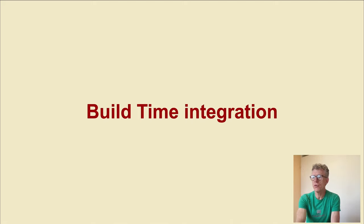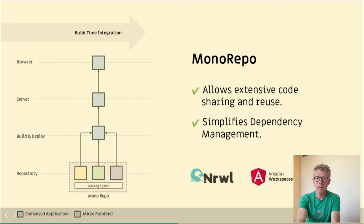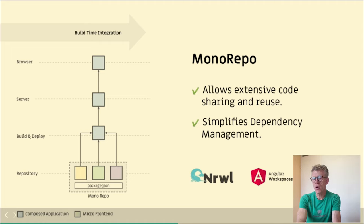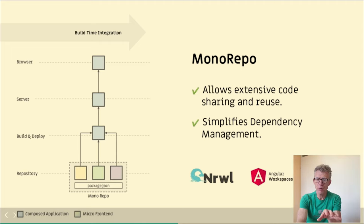Build time integration: we publish each micro frontend as a package, and we have a container application that bundles these micro frontends at build time. For build time integration, it's also handy to use a monorepo. A monorepo is one repository that stores multiple micro frontends and applications — one repo for multiple applications. We use a container package.json to bundle our micro frontends together.